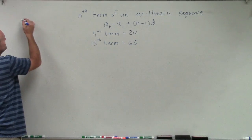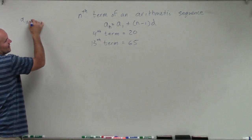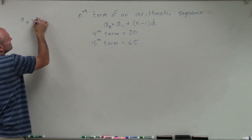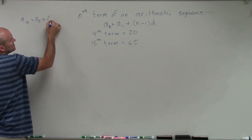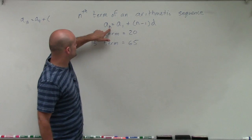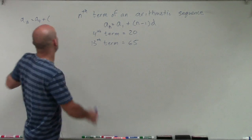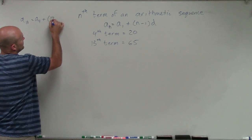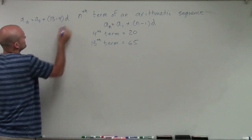So rather than a sub n, I'm going to use a sub 13 equals, instead of a sub 1, I'm going to say a sub 4 plus, now instead of n we use 13, and instead of 1 we use 4. So this is going to be 13 minus 4 times d.